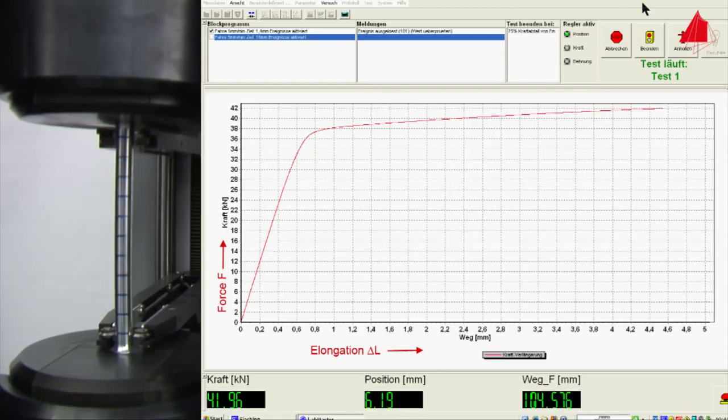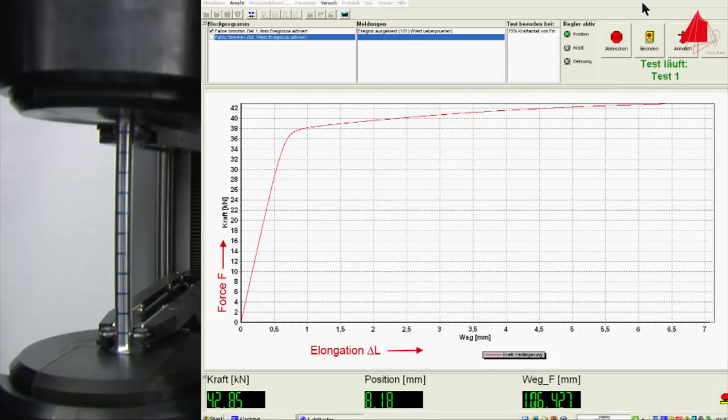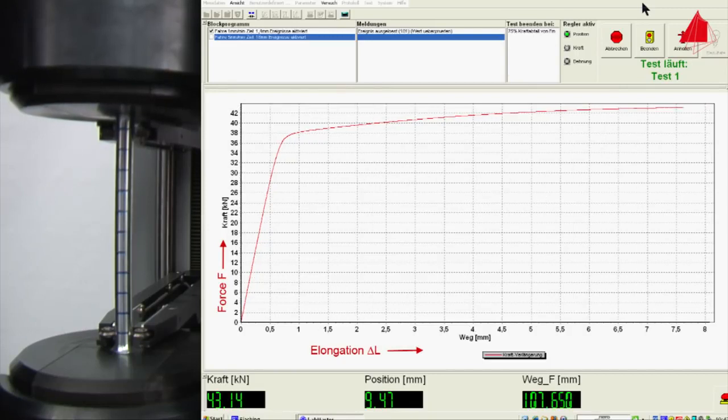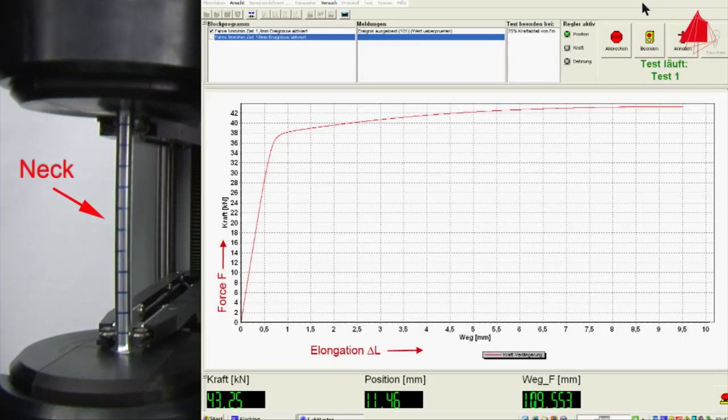In the further course of the tensile test, the force increases and the test piece again is strained uniformly along its length. At the point of maximum force a neck develops, and all subsequent plastic deformation is confined to this neck until fracture finally occurs there.